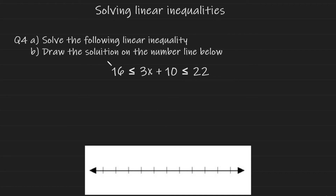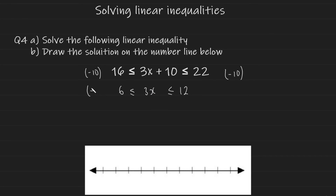For this next example, the inequality has two inequality symbols in it — a compound inequality — but solving it is straightforward. We isolate x by subtracting 10 from all three parts: 16 − 10 = 6, the middle expression becomes 3x, and 22 − 10 = 12. Then we divide all parts by 3: 6 ÷ 3 = 2, 3x ÷ 3 = x, and 12 ÷ 3 = 4. The solution is 2 ≤ x ≤ 4, meaning x is between 2 and 4 inclusive.